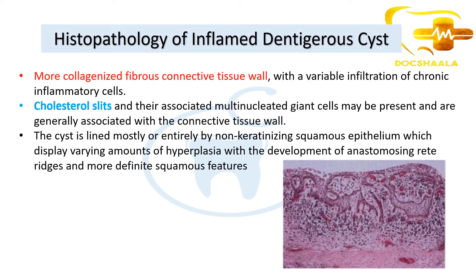For the inflamed dentigerous cyst: a more collagenized fibrous connective tissue wall is seen with variable infiltration of chronic inflammatory cells. Cholesterol slits and their associated multinucleated giant cells may be present, generally associated with the connective tissue wall. The lining is mostly or entirely non-keratinized squamous epithelium displaying varying amounts of hyperplasia with development of anastomosing, rete ridges and more definite squamous features.